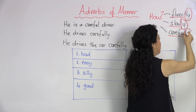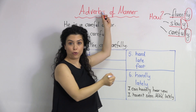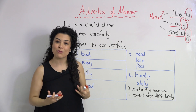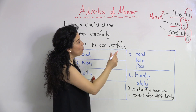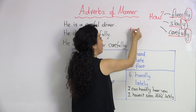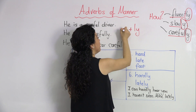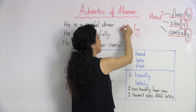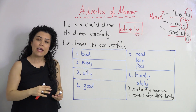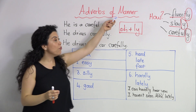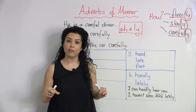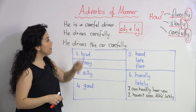Look: fluent, slow, and careful are adjectives. When you add -ly right after the adjective, you form adverbs and you talk about how you do certain things. So the rule to form an adverb is to add -ly right after the adjective. This is the general rule. Now let's see how adverbs of manner are different from adjectives in a sentence.